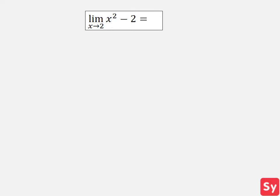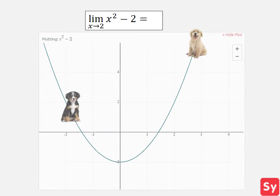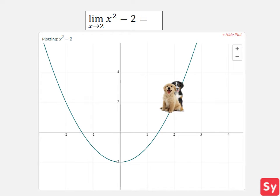Our problem is the limit of x squared minus 2 as x approaches 2. So let's see a graph of the function. We'll use puppies to represent the x values. We want to see what y value is being approached as x approaches 2. We see that as the puppy on the left and the puppy on the right approach 2, they both approach 2 on the y axis. Therefore, the limit is 2.